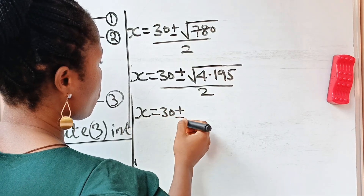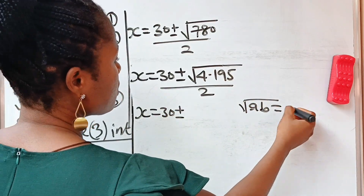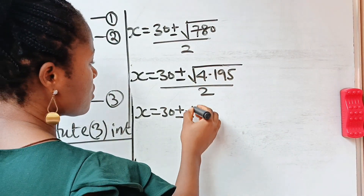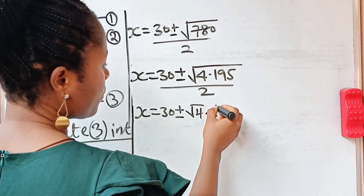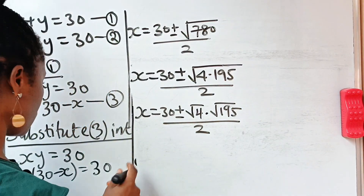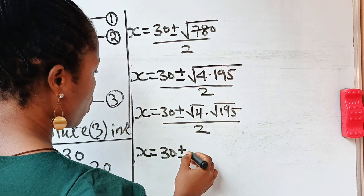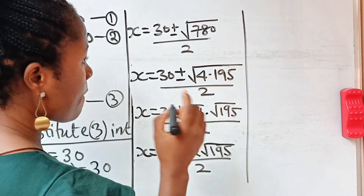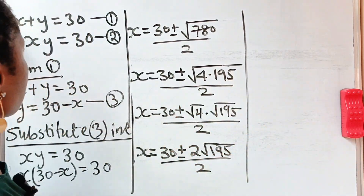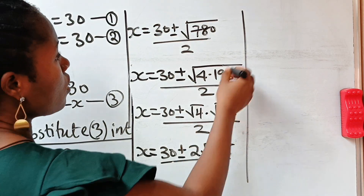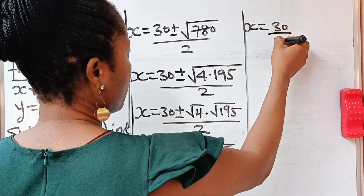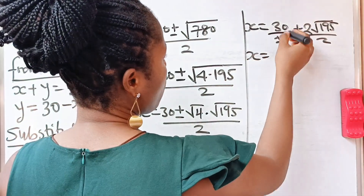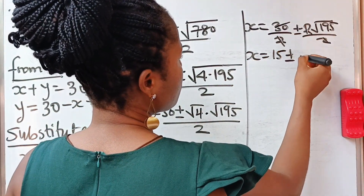So x equals 30 plus or minus — using the rule that the square root of a times b equals root a times root b — we get square root of 4 times square root of 195, which is 2 root 195. So x equals 30 plus or minus 2 root 195, all divided by 2. Dividing through: x equals 15 plus or minus root 195.